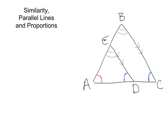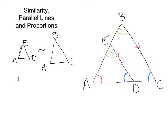So if we look at these two triangles separately, we have triangle AED and we have triangle ABC. Because they have angle-angle-angle in common, we can say that these two triangles are similar. So we can say that triangle AED is similar to triangle ABC.